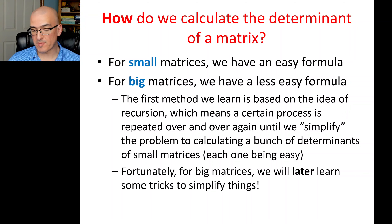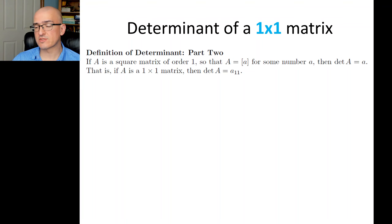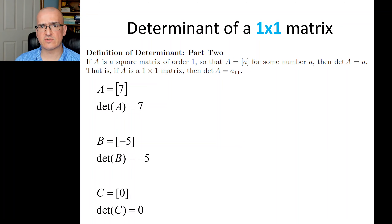Don't freak out or panic. There are certain spots where this is going to look horrible, but it'll get better. The beginning is very nice. Suppose we have a square matrix of order one — a 1x1 matrix, which is just a single number. The determinant of that single-number matrix is just whatever that number is. For example, if the matrix is 7, the determinant is 7. If the matrix is -5, the determinant is -5. If the matrix is 0, the determinant is 0.